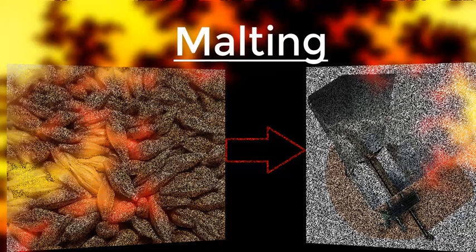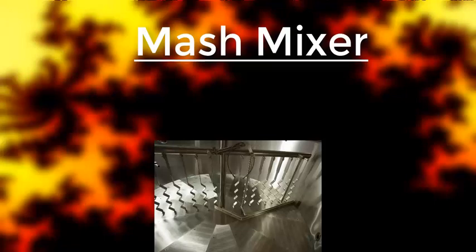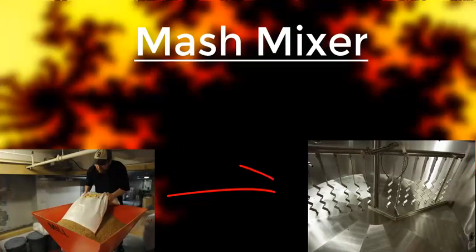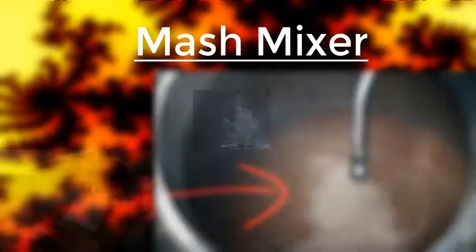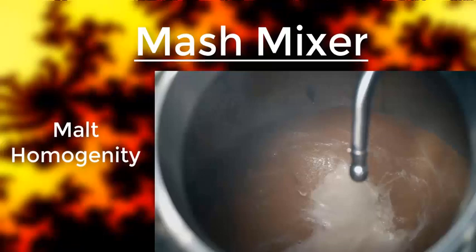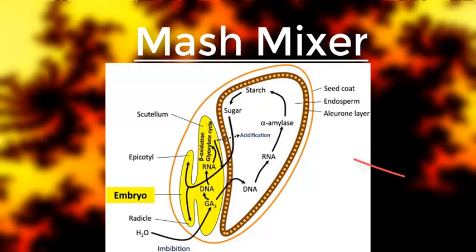Next we have the mash mixer. You introduce the starch from the milling process and add hot water to it. Essentially, when you do this, it looks like a porridge-like substance called malt homogeneity. The alpha amylase and beta amylase are activated by the warm water — hot enough to activate the enzymes but not hot enough to denature their proteins — helping break down the endosperm to release the starch and therefore make it into simple sugars, or carbohydrates, which is done with the help of other enzymes we'll get into later.